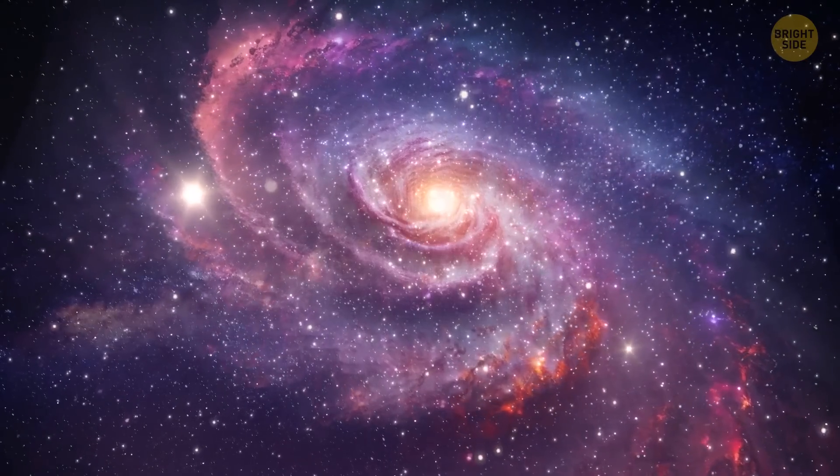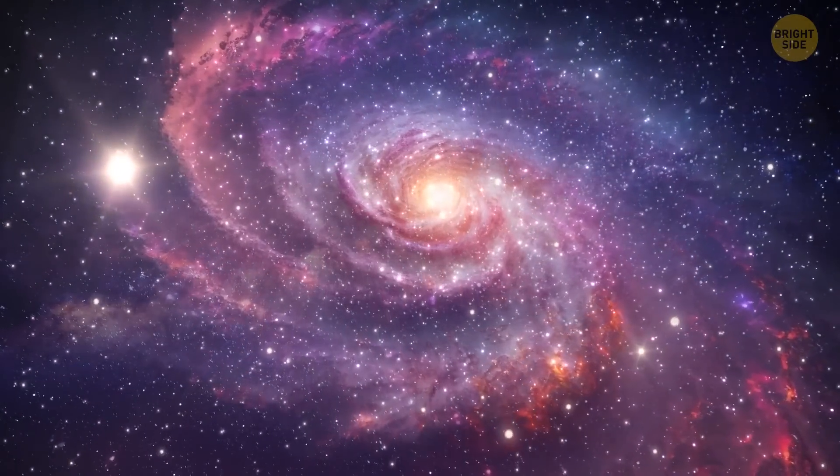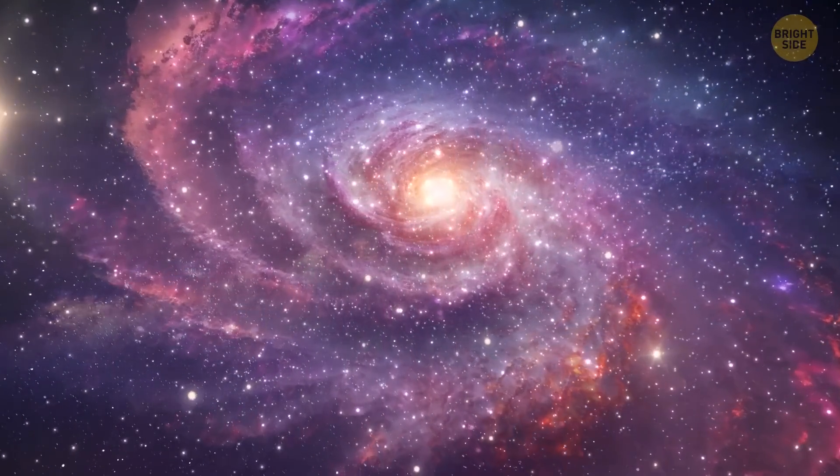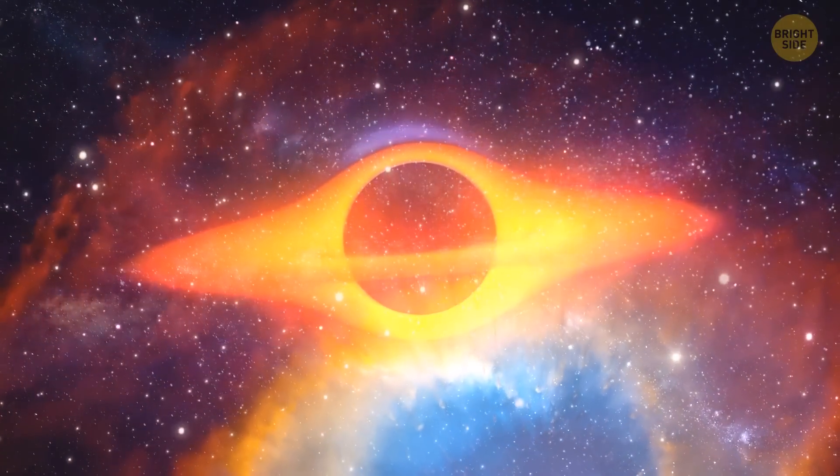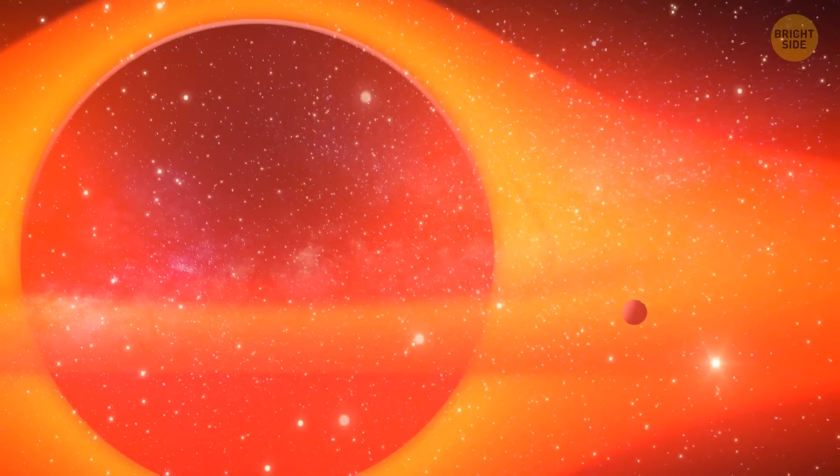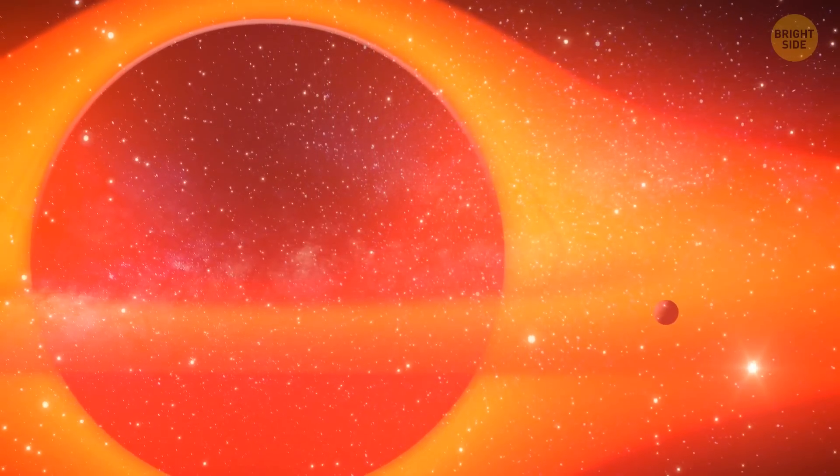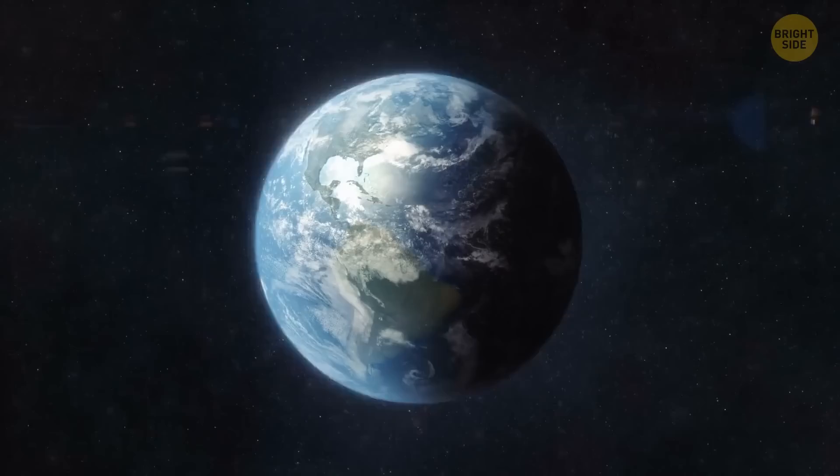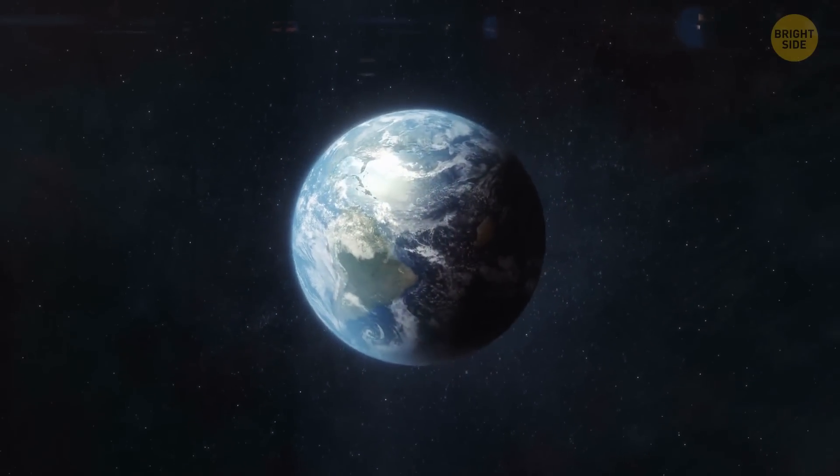There is a supermassive black hole smack dab in the middle of our galaxy, the Milky Way. Its name is Sagittarius A star, and it's 4.3 million times as heavy as the sun. And nope, we aren't going to be pulled into this hole. It's more than 26,000 light years from Earth, too far to have any influence on our planet.